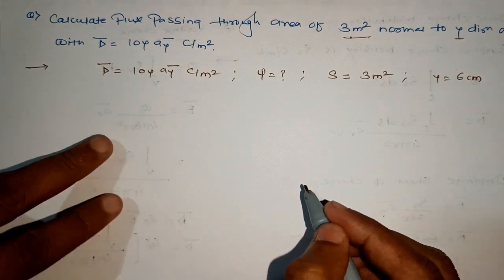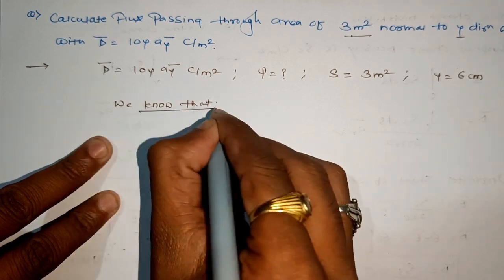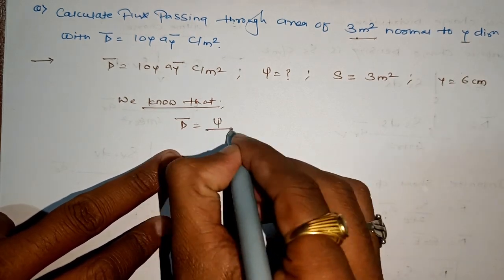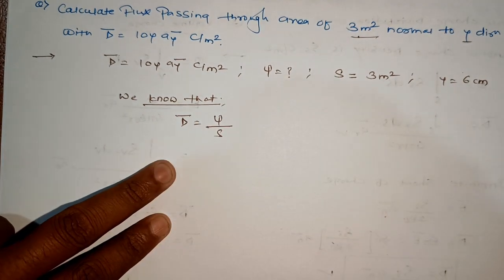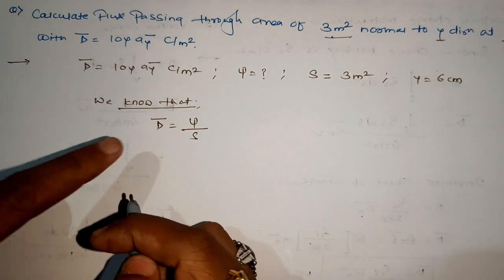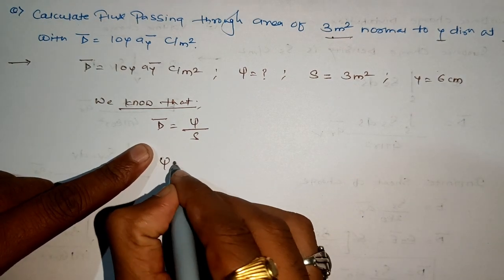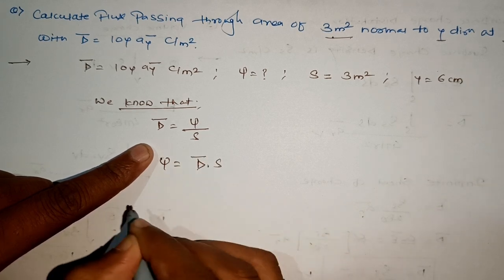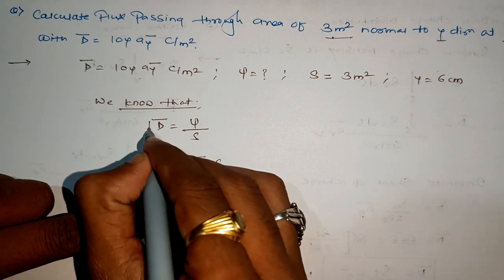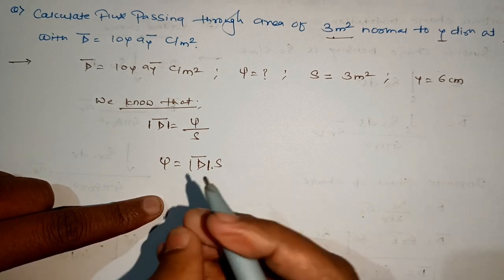Let us write the formula first. Electric flux density is the ratio of total flux per unit surface area. Since D-bar and S are given, we need to find psi. So we write psi is equal to the product of D-bar into S — we will find its magnitude.